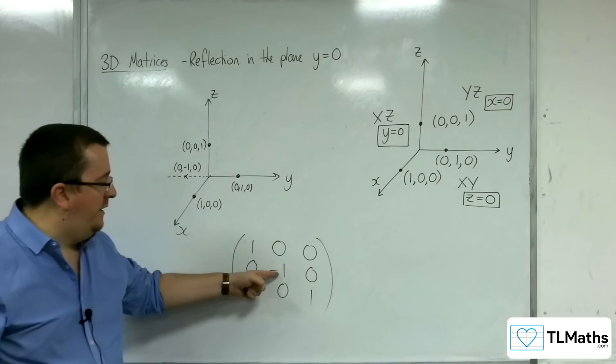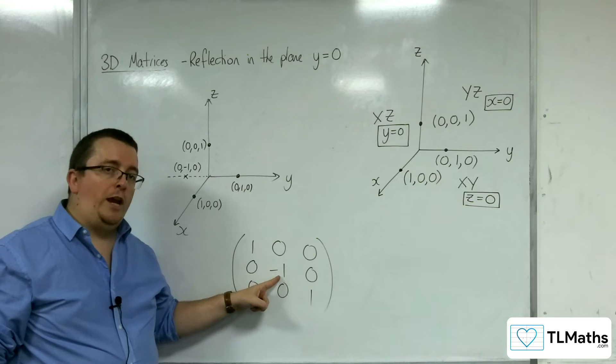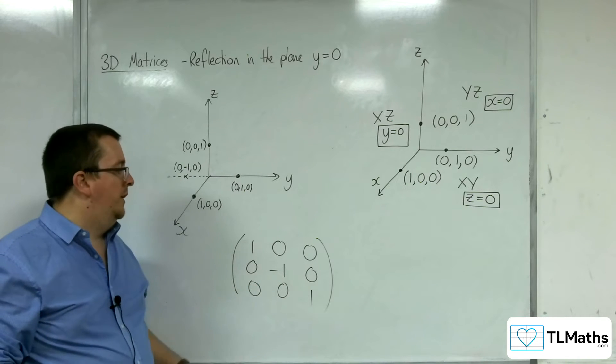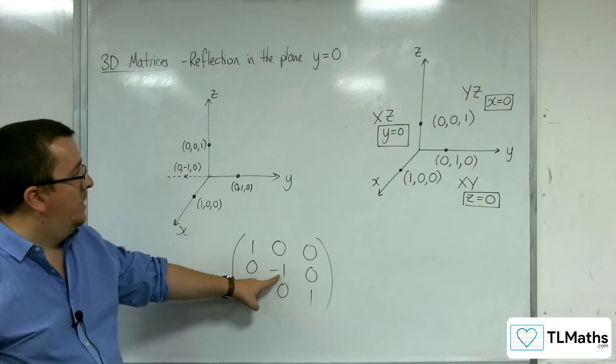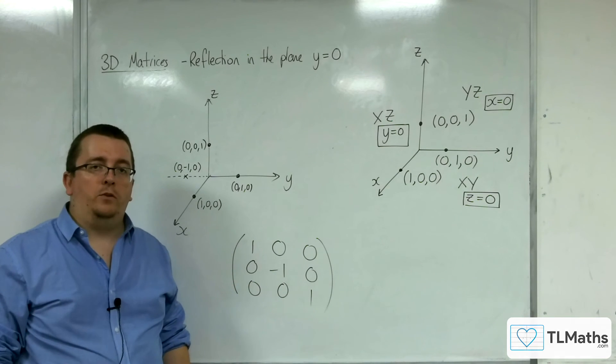And so you can see that it is the y that has changed sign from the identity matrix, and so it is a reflection in the plane xz, or in the plane y equals 0, as it can be called.